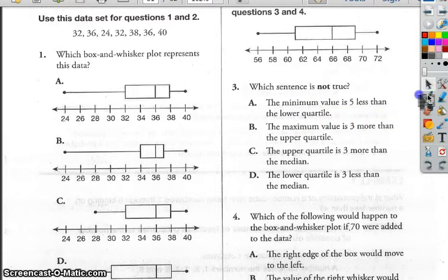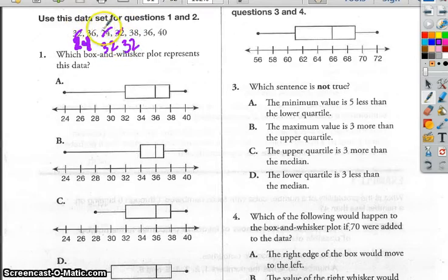So first, I see that I need to put these numbers in order from least to greatest here. So I see 24 is the smallest, and 30s. I see 32, and 32 again. And I see two 36s, and 38 and 40.